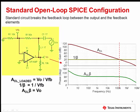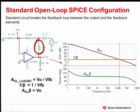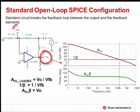Therefore, here is the recommended open loop SPICE circuit configuration for op-amp circuits. The feedback loop is broken between the op-amp output and the feedback elements. The AC signal source is injected into the feedback network, and measurements are taken at the output, VO, and the feedback node, VFB. With the feedback loop broken as shown, the equations for generating the desired curves are as follows.